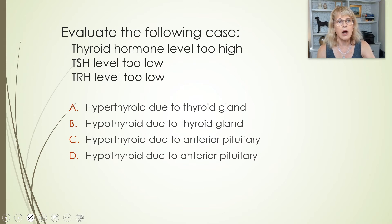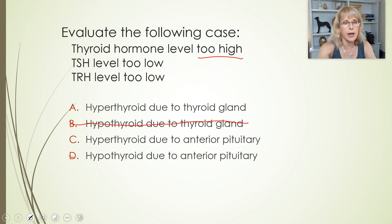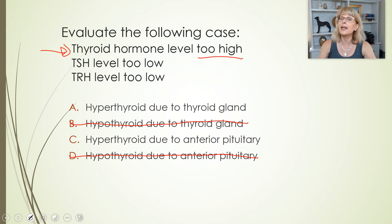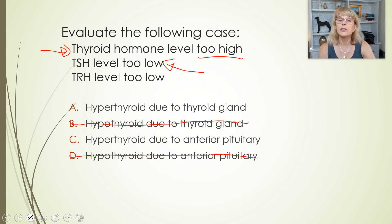Case two: the thyroid hormone level is too high, TSH levels are too low, and TRH levels are too low. Too high means hyperthyroid — we can cross out two answers, giving us a 50/50 shot. Here is someone making not just pumpkin lattes but lots of pumpkin lattes. Was he told to by his manager? No, he was not. So we have a patient who is hyperthyroid because of their thyroid gland.